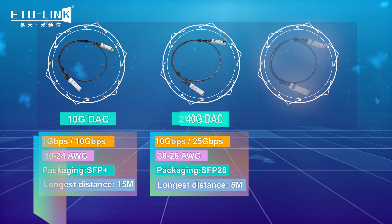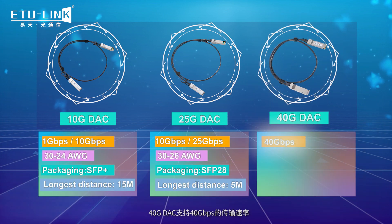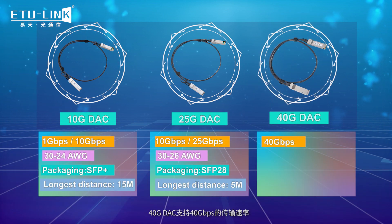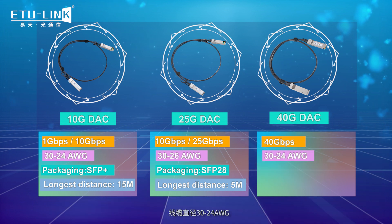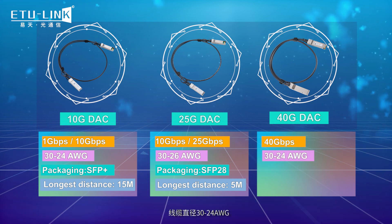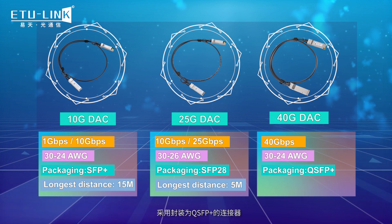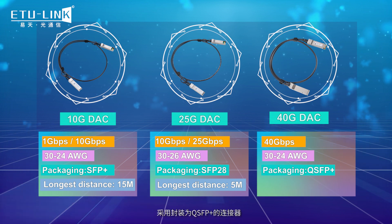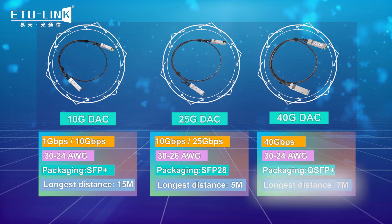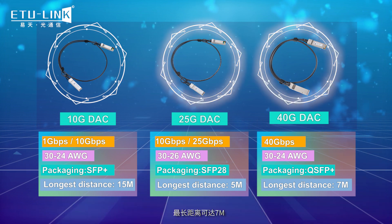The 40 Gb DAC supports a transmission rate of 40 Gb. The cable diameter is 30 to 24 AWG, the packing form is QSFP Plus to SFP Plus, and the longest distance can reach 7 m.